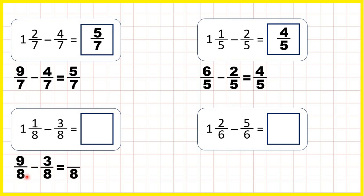The denominator stays the same. Nine minus three is six, so our answer is six-eighths.